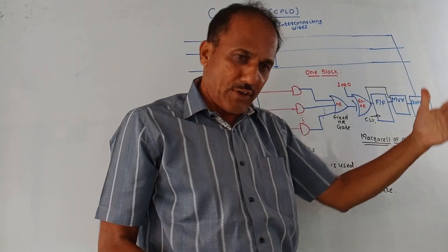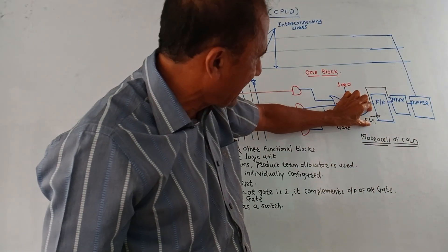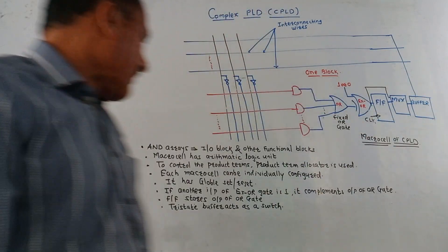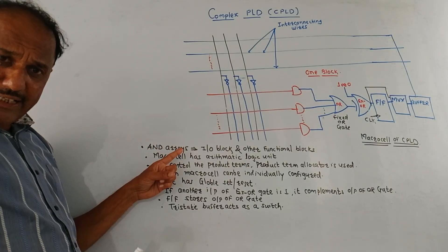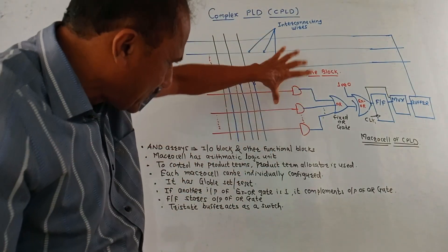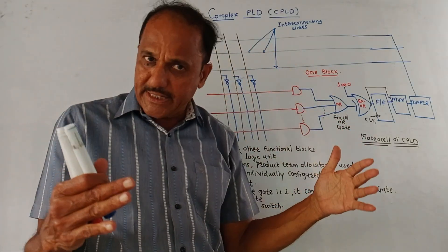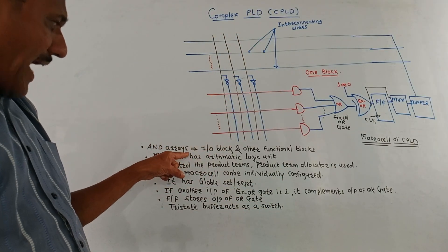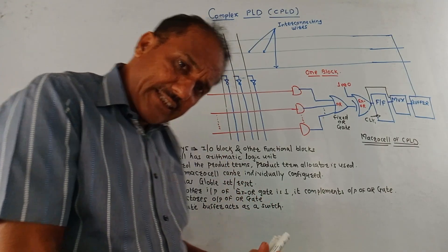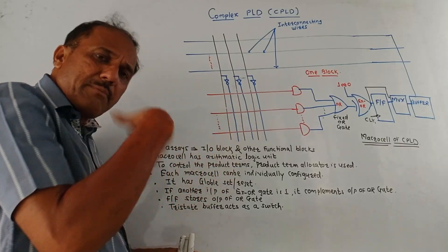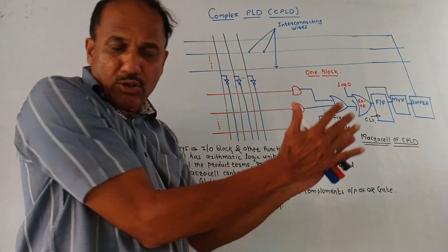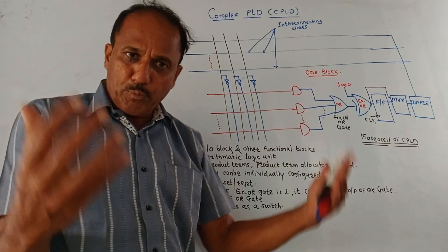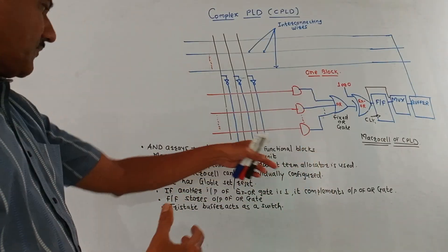The output of the XOR gate is given to the flip-flop. It is a clocked flip-flop because we are applying a clock signal. Then the output of the flip-flop is given to the MUX and a buffer. So it consists of AND arrays — N number of logical AND gates. Input to these AND arrays is from the input-output block and some other functional blocks.